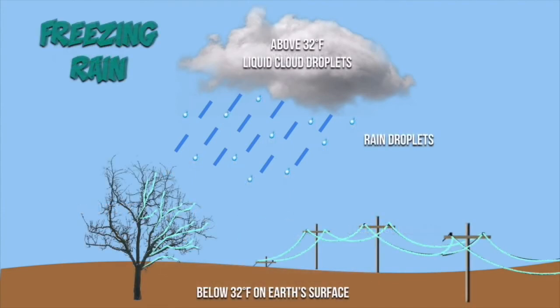Freezing rain is very similar to sleet. Instead of coming down as a slushy mix, liquid rain droplets come down and actually freeze because the Earth's surface is so cold. The freezing of these droplets occurs on things like power lines and tree branches, becoming very hazardous because the extra weight on branches and power lines can cause them to break.